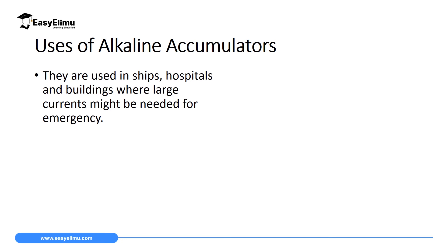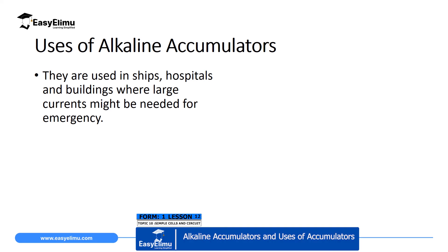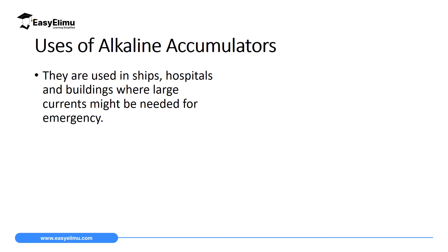The uses of alkaline accumulators are based on the advantage that a large amount of current can be drawn from them within a very short time. They are used in ships, since you cannot connect electric cables to ships — ships are equipped with many alkaline accumulators connected in series to supply electrical energy. They are also used in hospitals and buildings where large current may be needed for emergencies such as electricity blackouts, serving as a backup power source during events like surgery.